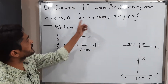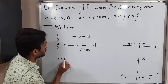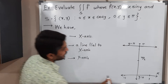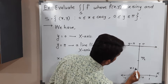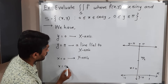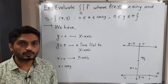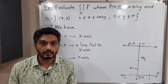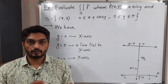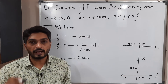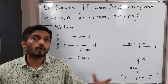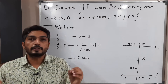Next, X is equal to zero — that is nothing but the Y axis. And the last curve is X is equal to cos Y. This is not a regular curve like Y equals cos X. Here X is equal to cos Y, so it looks a little different.